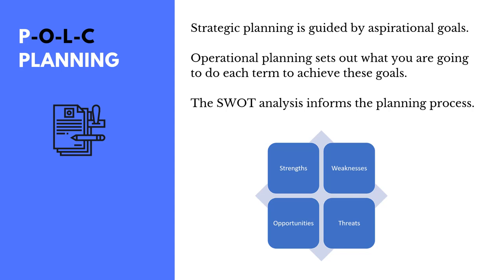The operational plan sets out what you're going to do each term. To create it, you divide the school year up into terms, looking at the school events and library events that happen during the year and marking those in before planning how you will achieve the goals you've identified. The operational plan is a working document and should be updated every year or even every term. You might take unexpected leave, get a new principal, or face changing government policies or new curricula. The operational plan should be flexible.